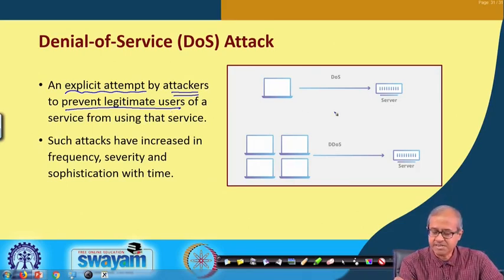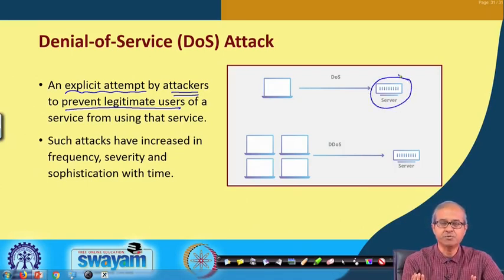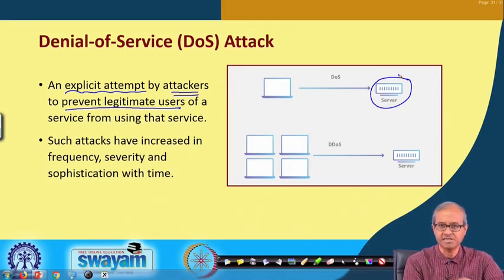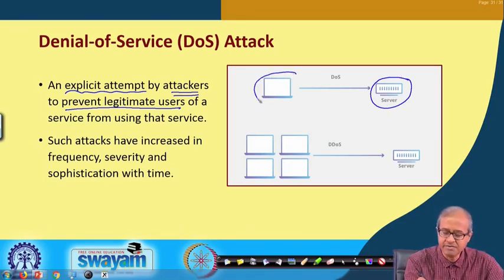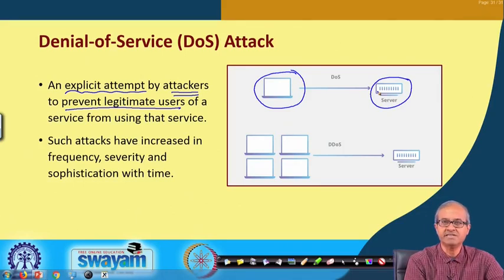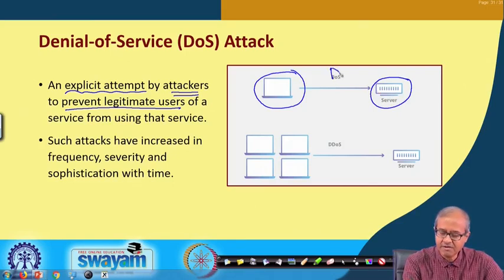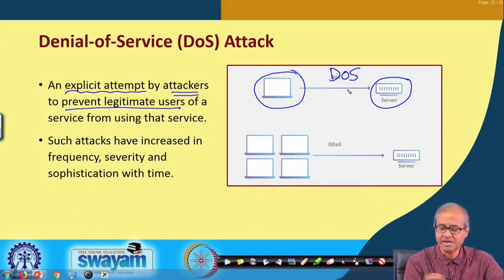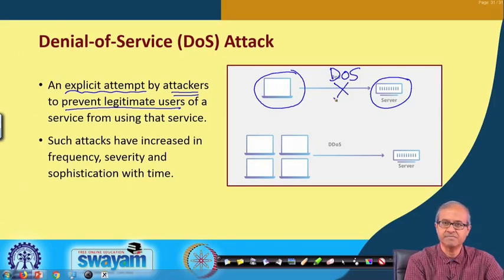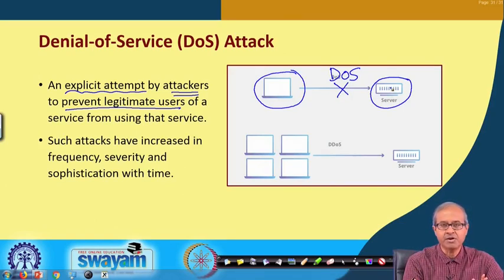If you look at this picture, here we have some kind of a server providing some service — it can be a web server, mail server, or an application server. A user is sending some request for service. If there is a denial of service (DoS) attack mounted here, what will happen is that the legitimate user will not have access to this service.